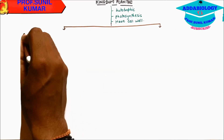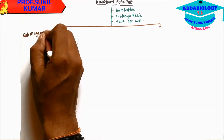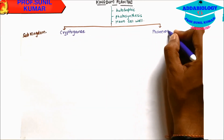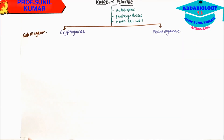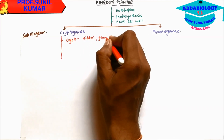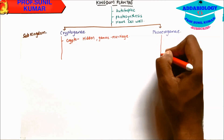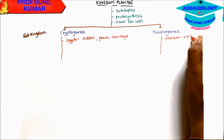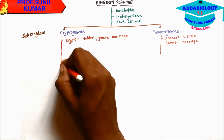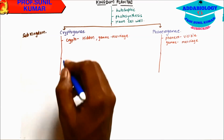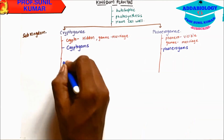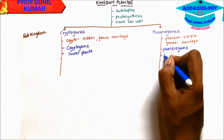Kingdom Plantae is further divided into two sub-kingdoms: one is Cryptogamae and the other is Phanerogamae. Crypto means hidden and Gam means marriage; Phanero means visible and Gam means marriage. Plants belonging to Cryptogamae are called Cryptogams, and plants belonging to Phanerogamae are called Phanerogams. Cryptogamae includes lower plants while Phanerogamae includes higher plants.